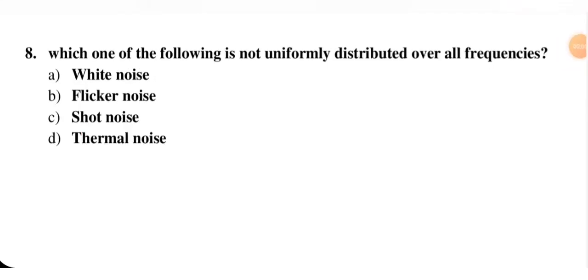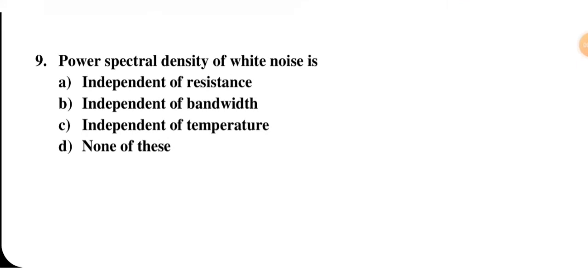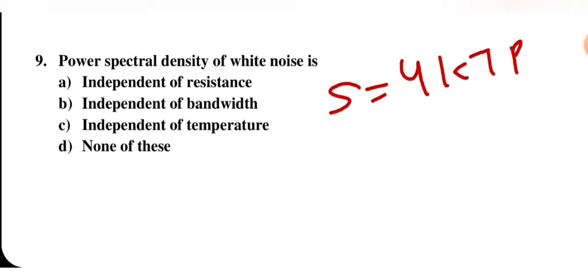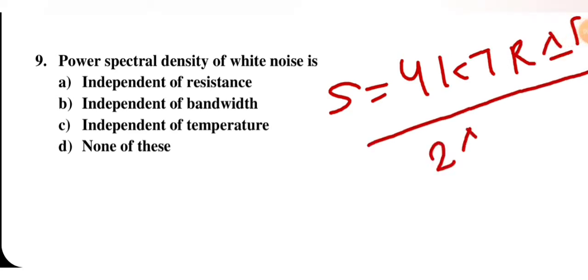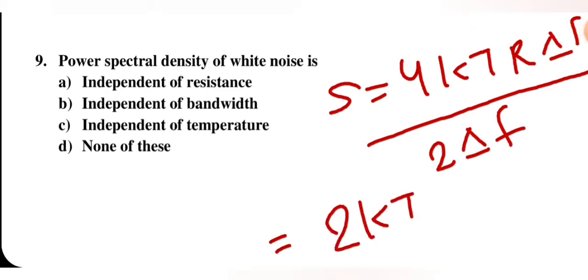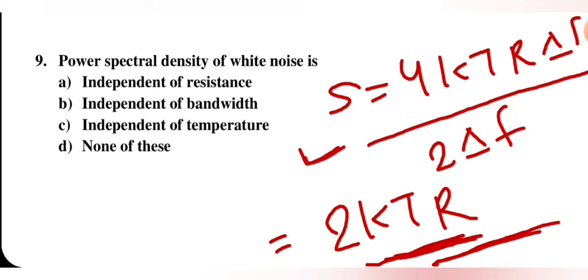Which of the following is not uniformly distributed over all frequencies — white noise, flicker noise, shot noise, or thermal noise? The correct answer is flicker noise, which is not uniformly distributed. Next question: power spectral density of white noise is independent of — resistance, bandwidth, temperature, or none of these? The formula is S = 4kTRΔf / 2Δf = 2kTR. There is no frequency component, so PSD is independent of bandwidth. B is the correct option.